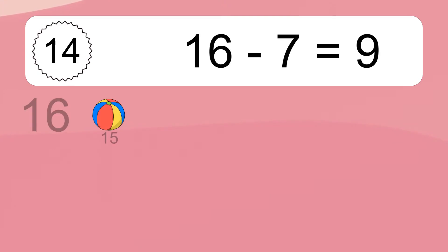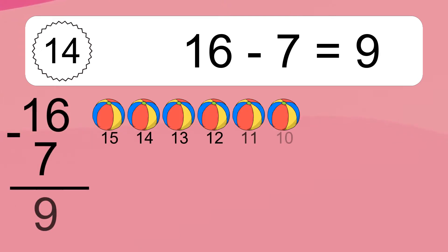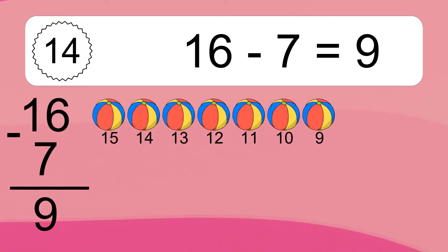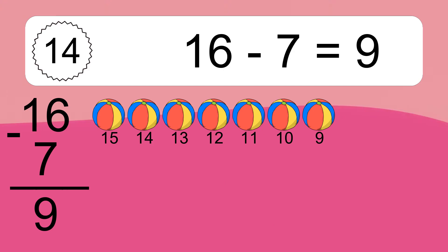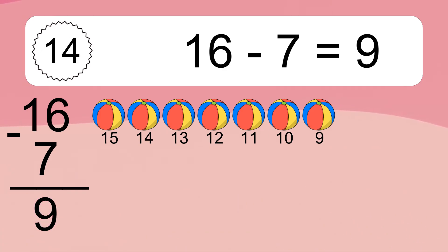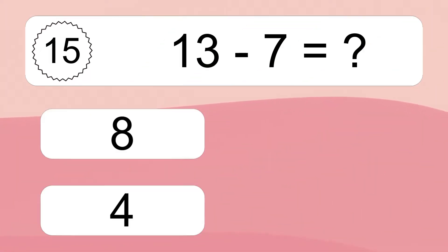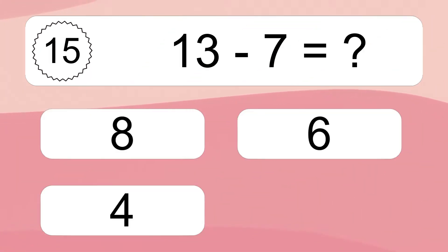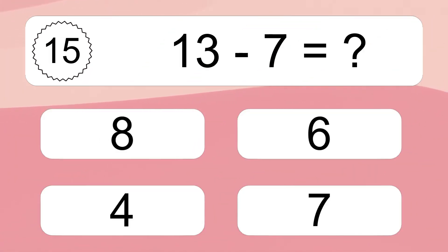16 minus 7 equals 9. Let's count it: 15, 14, 13, 12, 11, 10, 9. 13 minus 7 equals what?